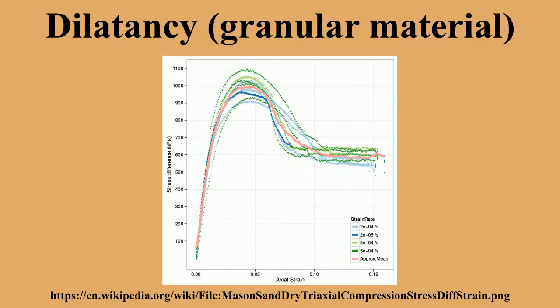In the initial stage of deformation, the volumetric strain decreases as the shear strain increases. But as the stress approaches its peak value, the volumetric strain starts to increase. After some more shear, the soil sample has a larger volume than when the test was started.